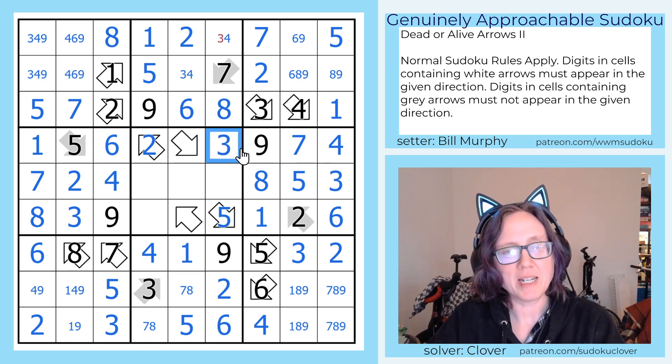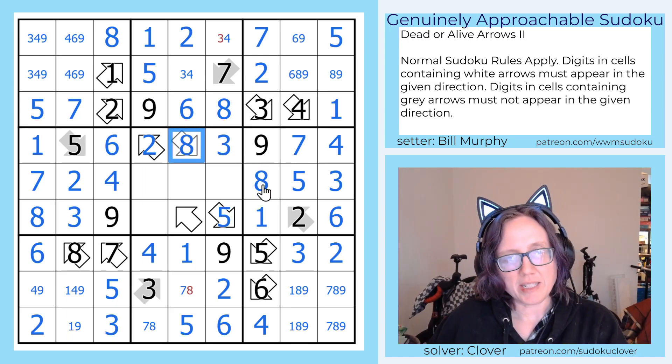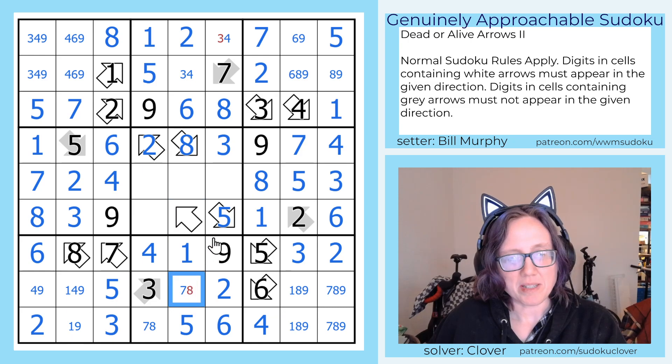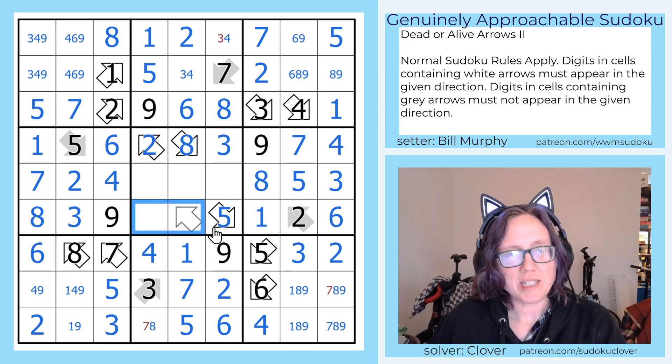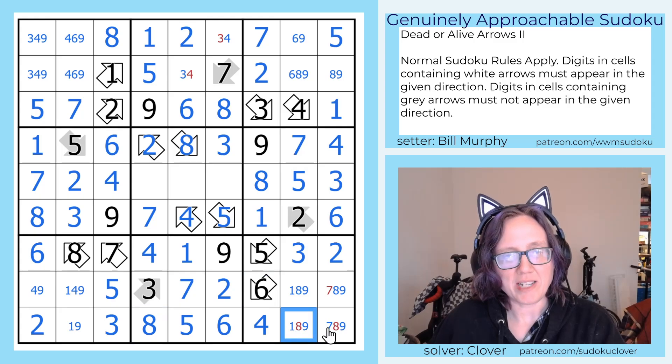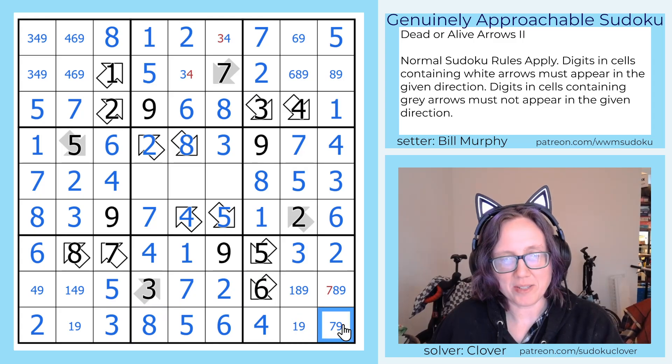So these are going to be a 3, 8 pair. That's a 3, and that is an 8. That makes this a 7. And here I need a 4 and a 7. That's a 4, that's a 7. That was an 8 all along.